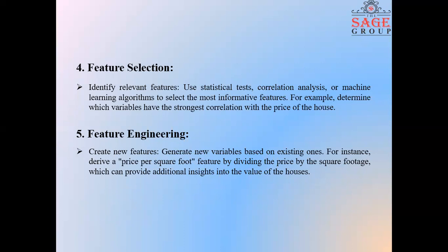Next is feature engineering. It can create new features. You can generate new variables based on existing ones. For instance, derive a price per square foot. You can have one more column price per square foot feature by dividing the price by the square footage, which can provide additional insights into the value of the house.